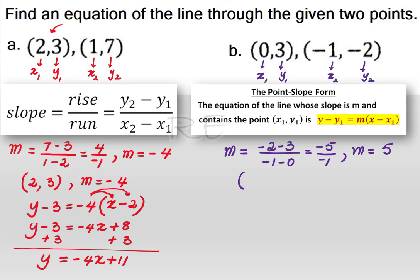Now, we're going to choose (0,3) as x1, y1, and the slope is m equals 5. So, y minus 3 will be equal to 5 times x minus 0.